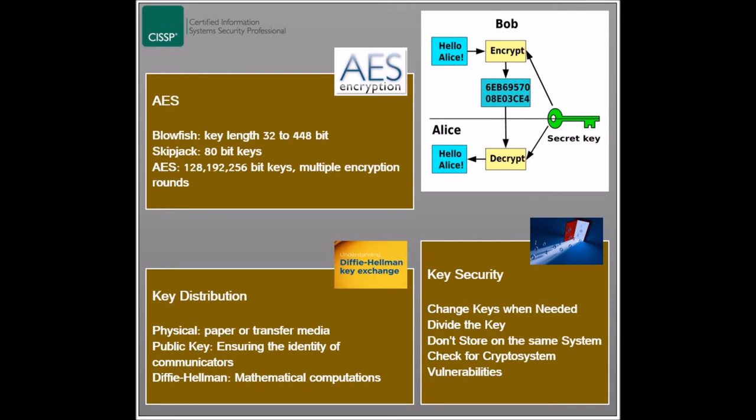The security of the key should be maintained at all times, and not just during its transmission. Some best practices exist that could be followed, such as never storing the keys on the same system as the data, considering dividing the key into parts and entrusting each part to a different entity, and changing the keys when someone who has knowledge of the keys has left the organization. Escrow services could be considered, where third parties could be entrusted with the keys or the mechanisms to retrieve the keys.